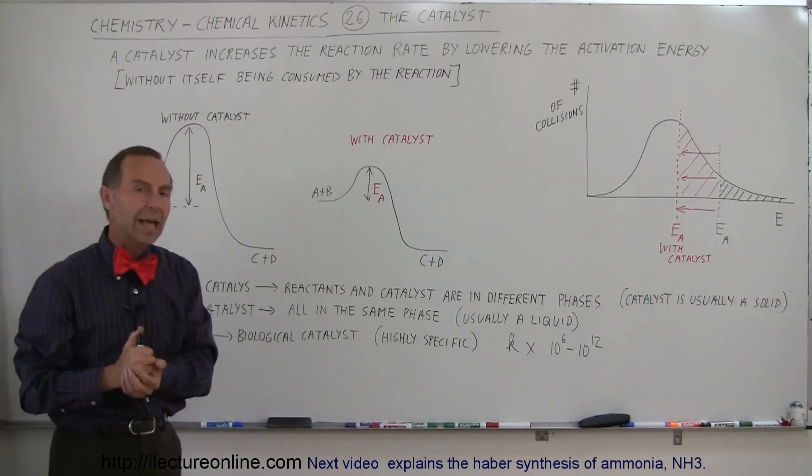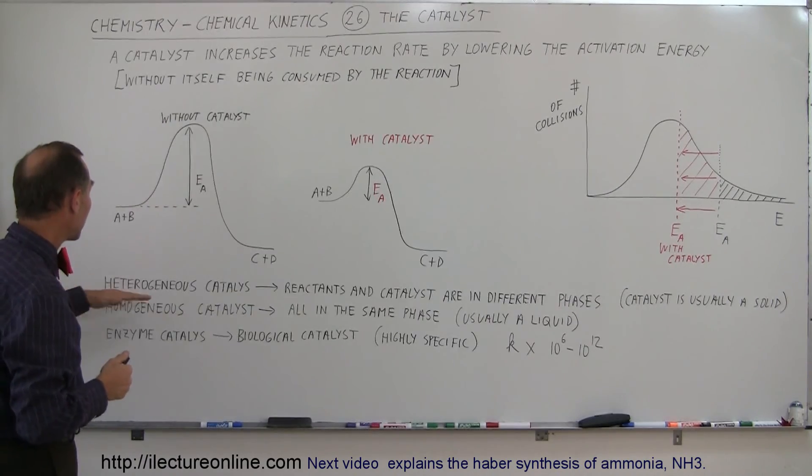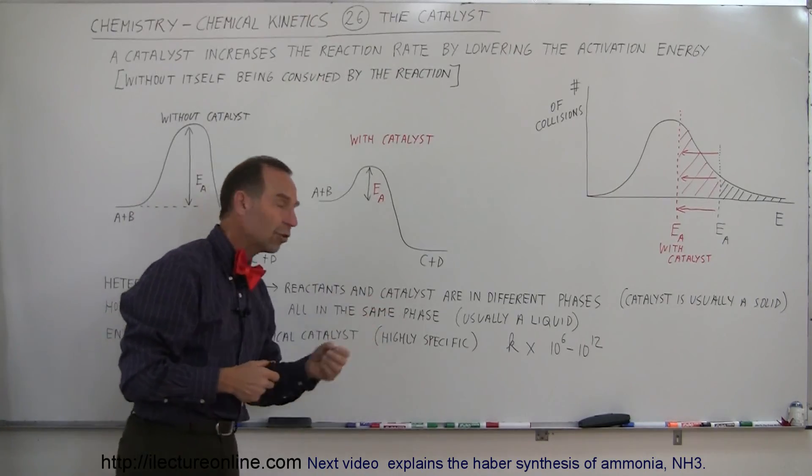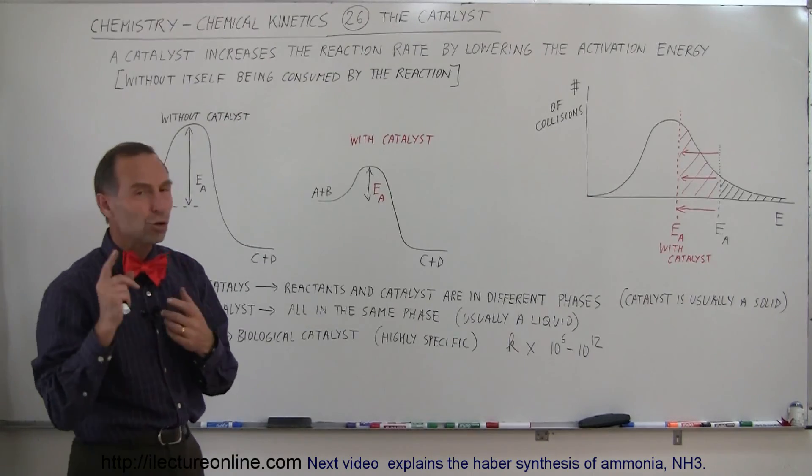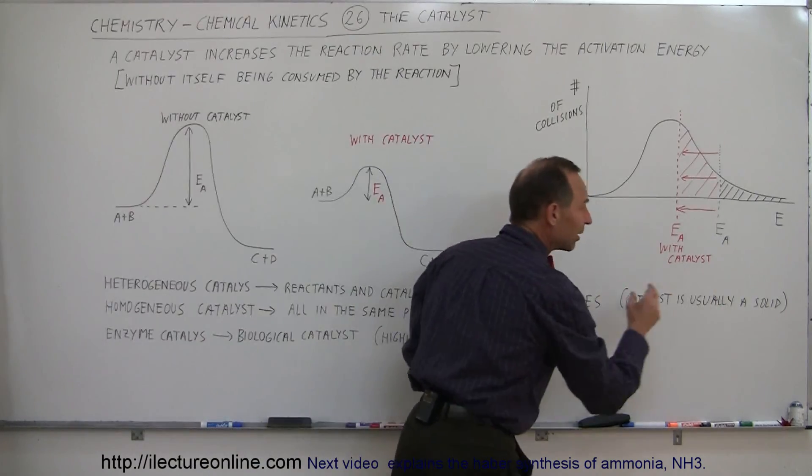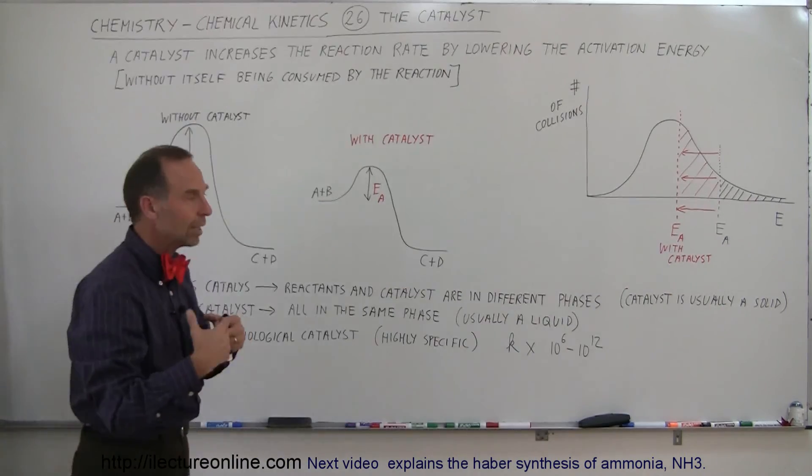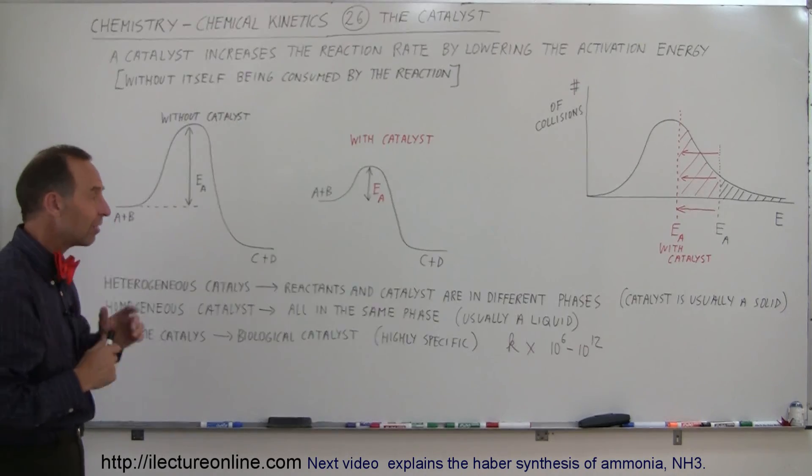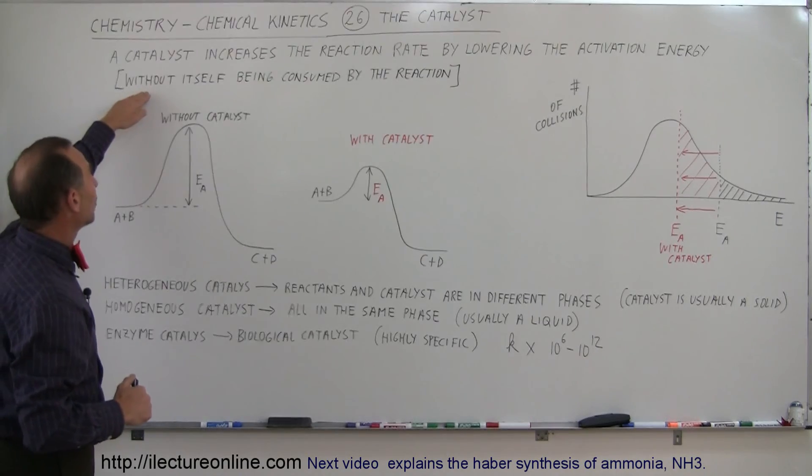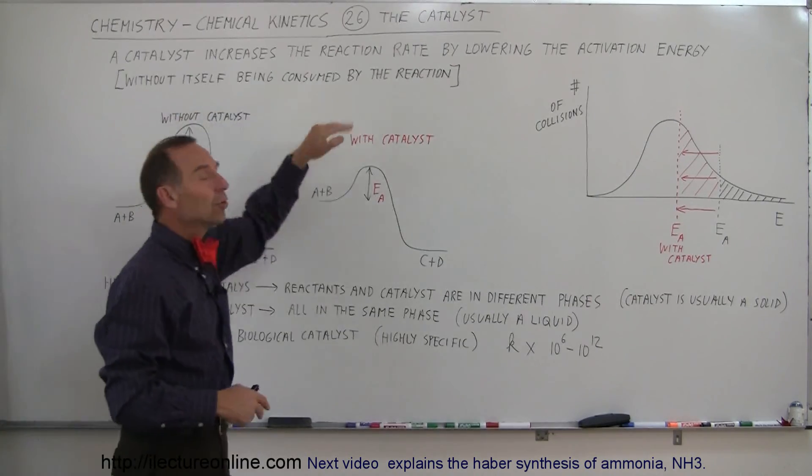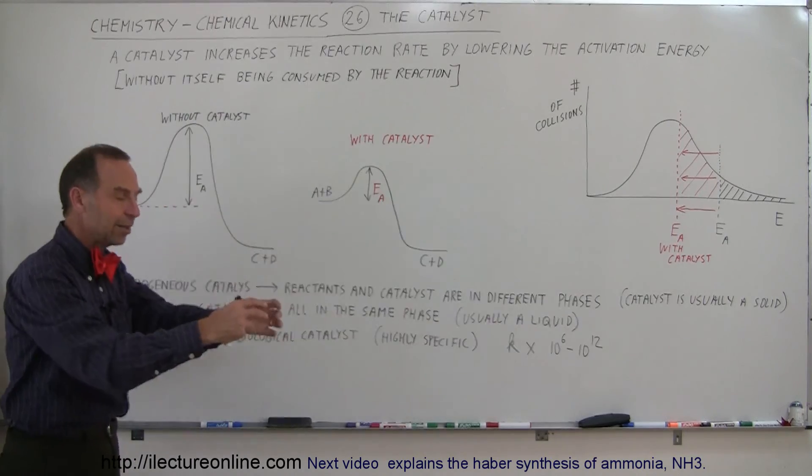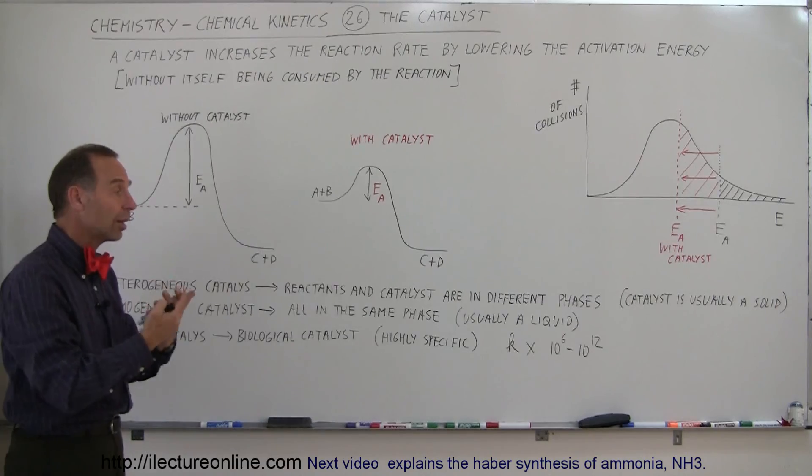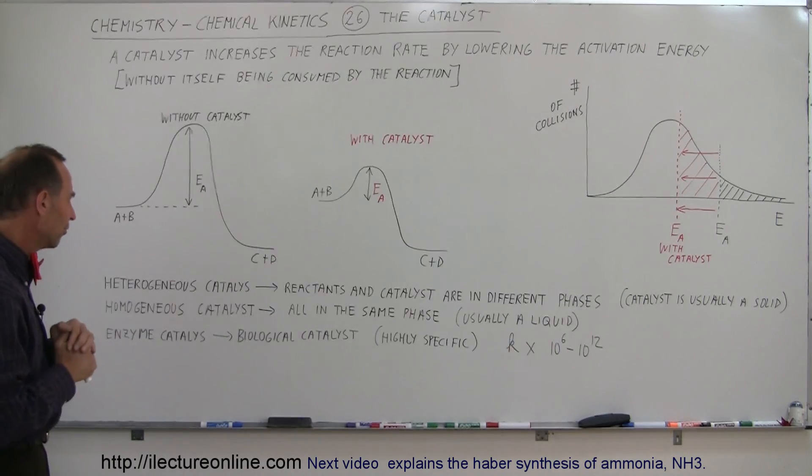So there's different kinds of catalysts. One type is a heterogeneous catalyst, which is where the reactants and the catalyst are in different phases. Usually what happens is the catalyst is some sort of metal that is placed within the reaction, within the gas or within the liquid, so that the reaction will take place a lot faster. And what's special about it is that the catalyst itself is not being consumed by the reaction. So the catalyst just sits there, it forms a platform where the reaction will take place a lot faster.